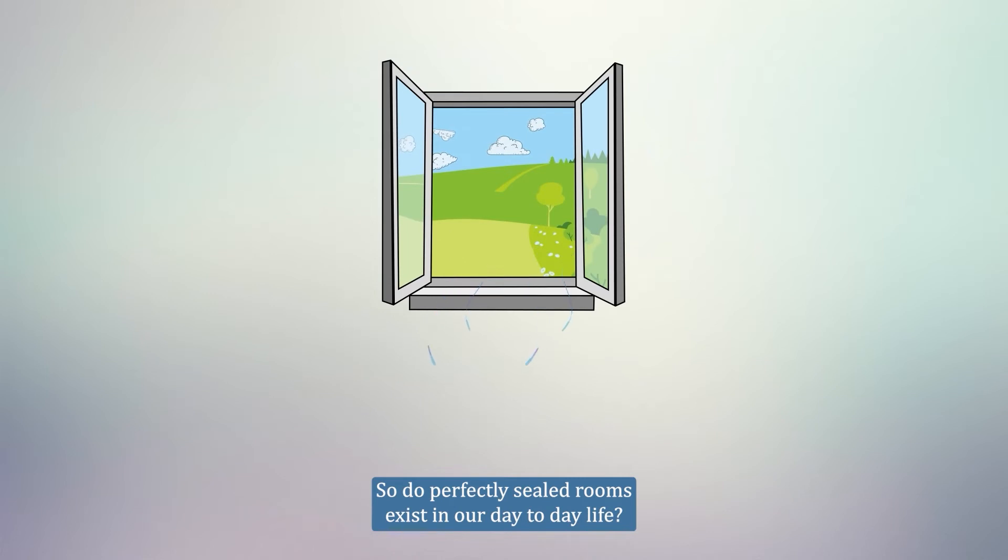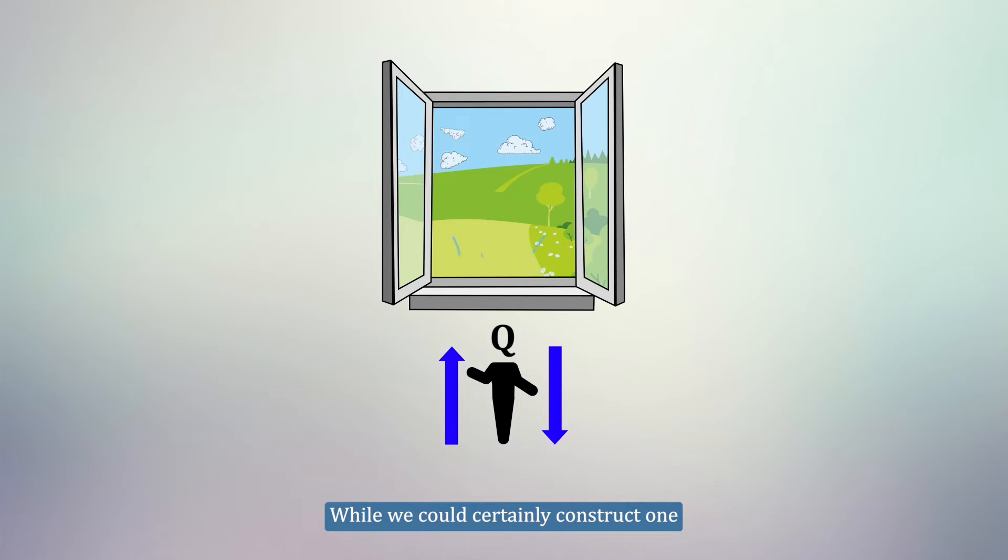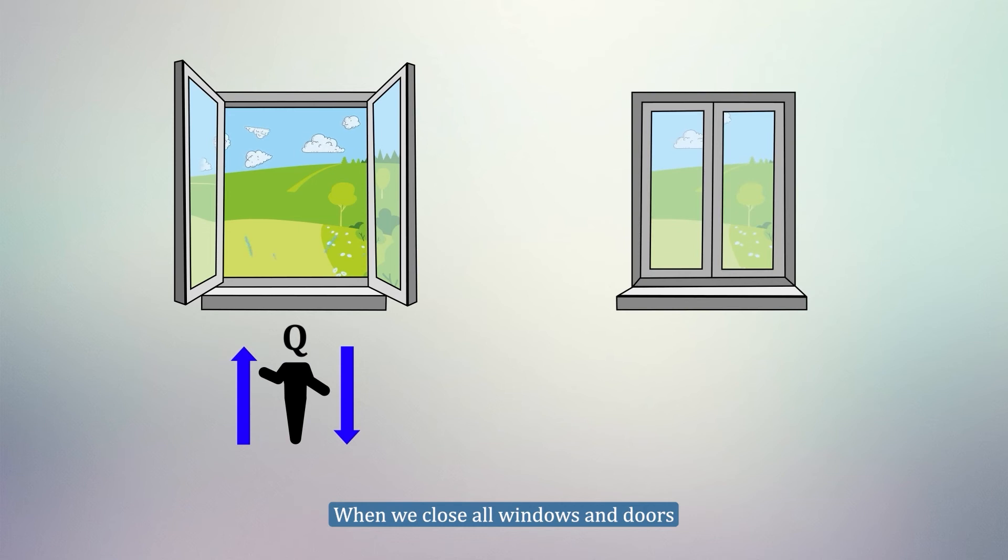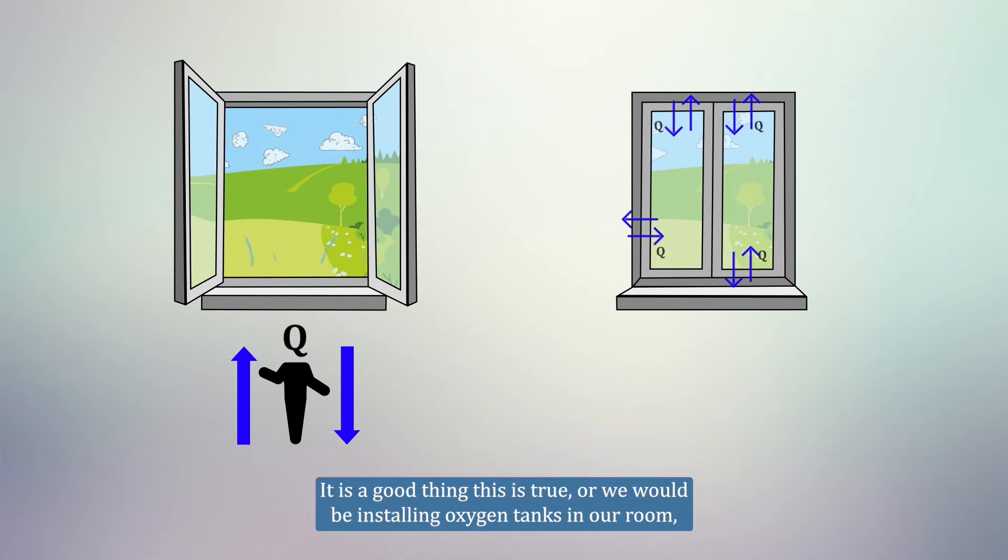So, do perfectly sealed rooms exist in our day-to-day life? Thankfully not. While you could certainly construct one, all rooms we use regularly are not perfectly sealed. When we close all windows and doors, this does significantly reduce the ventilation rate, but it will not reduce it to zero. It is a good thing this is true, or we would be installing oxygen tanks in our room.